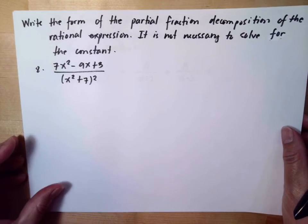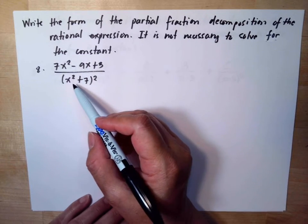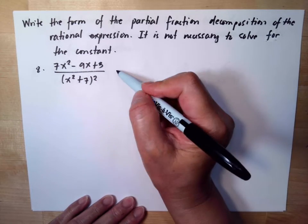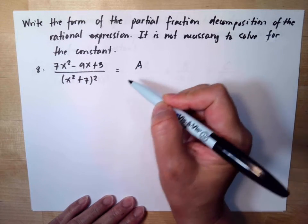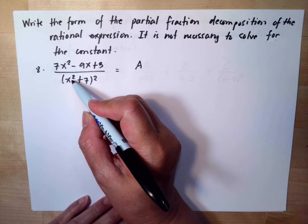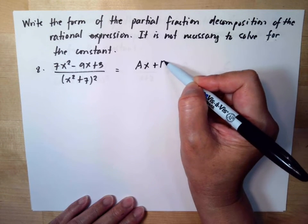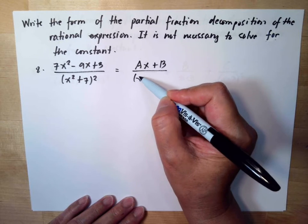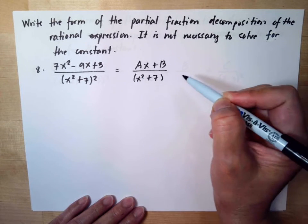For number 8, we have x squared plus 7. You will base this on the denominator. The x is squared, so you will say Ax plus B over x squared plus 7.